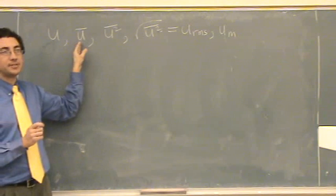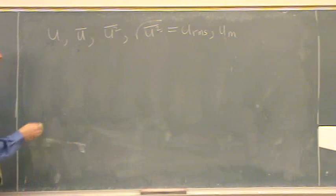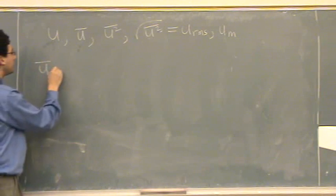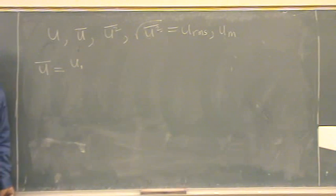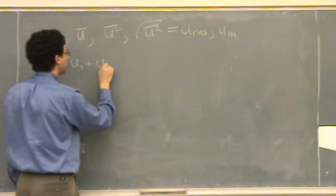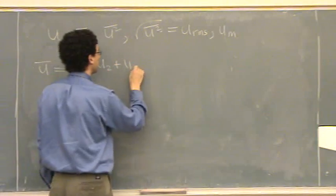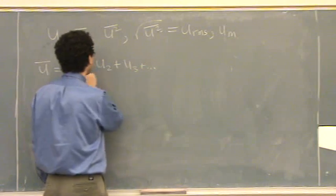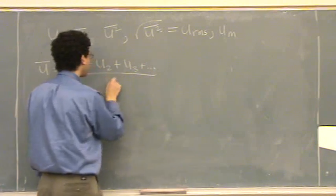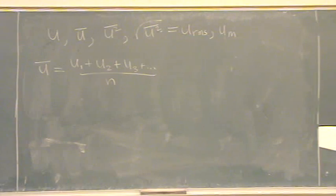This is just the average, just like you would take any other average. So U bar means the velocity of molecule 1, plus the velocity of molecule 2, plus the velocity of molecule 3, dot dot dot, divided by the total number, whatever the total number of molecules is. That's average.